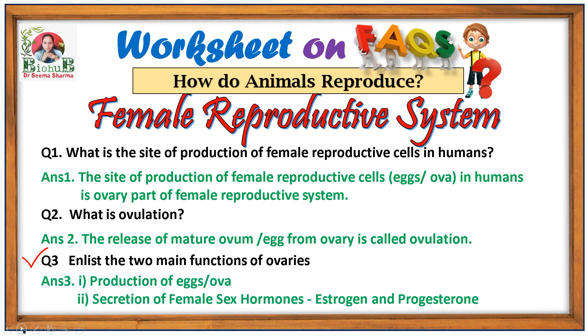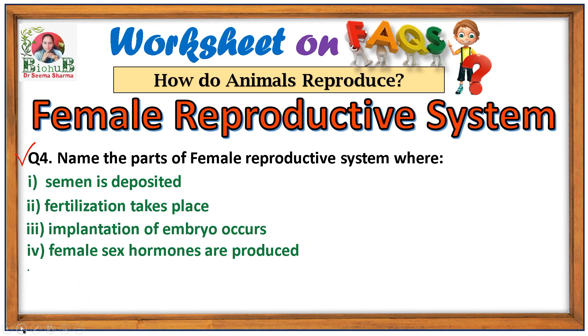Question number three: enlist the two main functions of ovaries. The first major function of ovaries is production of eggs or ova, and the second function is secretion of female sex hormones — estrogen and progesterone.